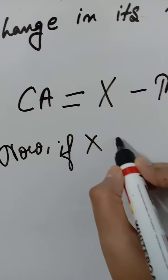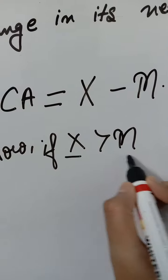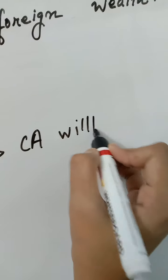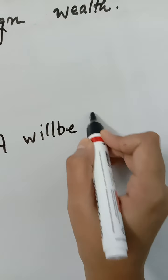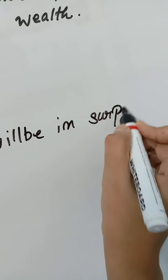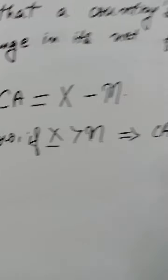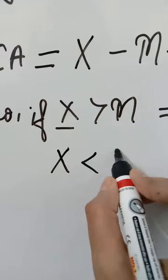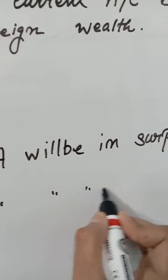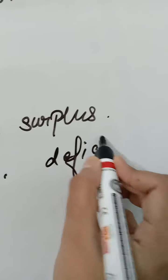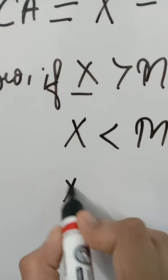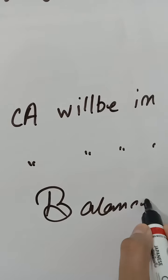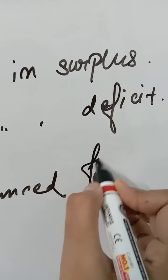If exports are greater than imports, the current account will be in surplus. If exports are less than imports — that is, X is less than M — then the current account will be in deficit. And if X equals M, then it will be balanced foreign trade.